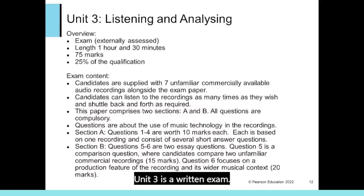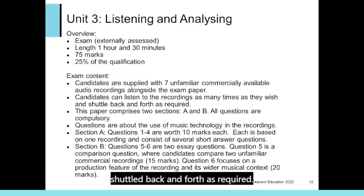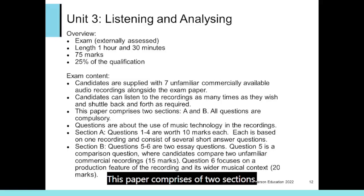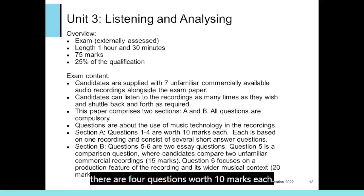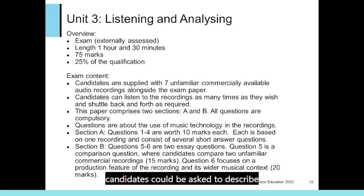Unit 3 is a written exam, 1 hour and 30 minutes long, worth 75 marks and 25% of the qualification. Each candidate receives an exam paper and seven audio files they haven't heard before; candidates can listen to the recordings as many times as they wish. Candidates will require a computer with media player software and headphones. The paper comprises two sections, all questions compulsory, focused on the use of music technology in the recordings. In Section A, there are four questions worth 10 marks each, each based on one recording, with several short answer questions ranging from one-mark multiple choice to six-mark written questions. Questions in past papers ask about production features of the songs — for example, candidates could be asked to describe the use of filtering on a synthesizer.